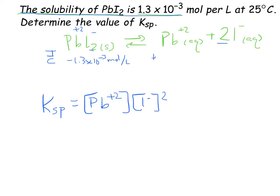Which means that that's how much Pb plus 2, 1.3 times 10 to the negative 3rd moles per liter, will be ions in solution. And twice that, 2.6 times 10 to the negative 3rd, is the number of moles of I minus in solution. So, all I have to do is take those numbers and plug them in my expression.